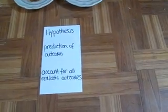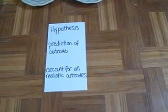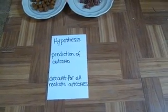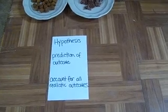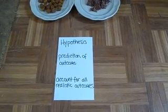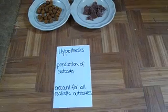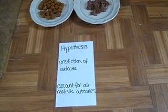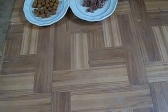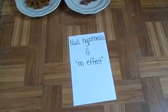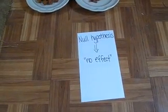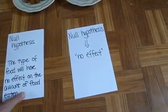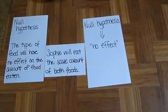The hypothesis is a prediction of the outcome. It's important that the hypothesis account for all realistic outcomes. We need a hypothesis that says she'll eat more of one food or less, and one that says she'll eat the same amount of each — because those are the realistic outcomes. She's not going to turn into a dragon, so we don't need to include unrealistic outcomes. The null hypothesis is always the no-effect hypothesis. We could say: the type of food will have no effect on the amount of food eaten, or Sophie will eat the same amount of both foods.